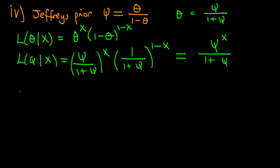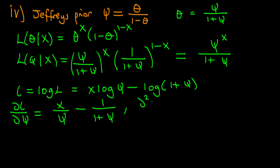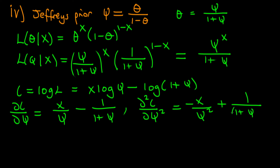Now that we have the likelihood, we can work out the log-likelihood. That's just x times the log of psi minus the log of 1 plus psi. Differentiating with respect to psi gives x over psi minus 1 over 1 plus psi. Differentiating again, the second derivative d²L over d psi squared equals minus x over psi squared plus 1 over (1 plus psi) squared.